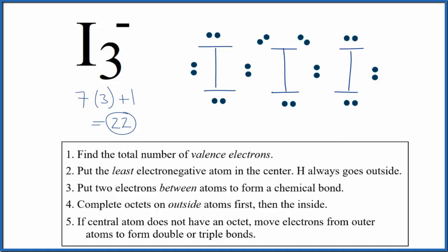Because we have an ion, we should put brackets around this, and we can put a negative sign out here to show that we have an ion with a negative one charge. So this is the Lewis structure for I3-, the tri-iodide ion.